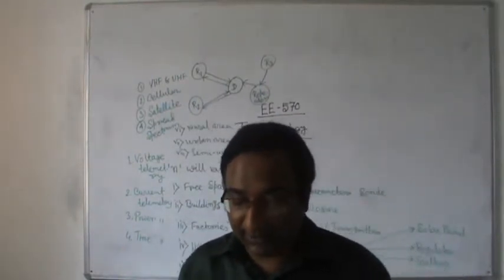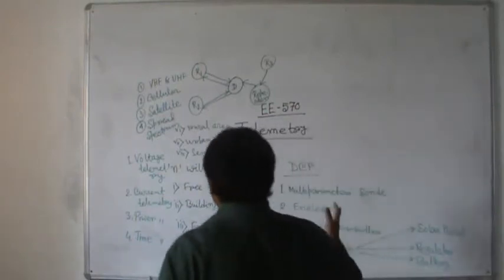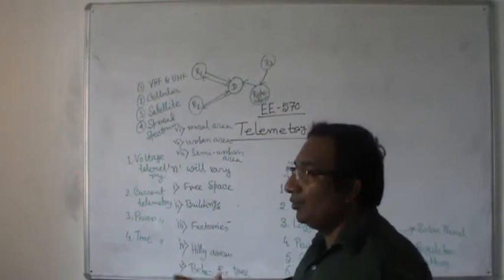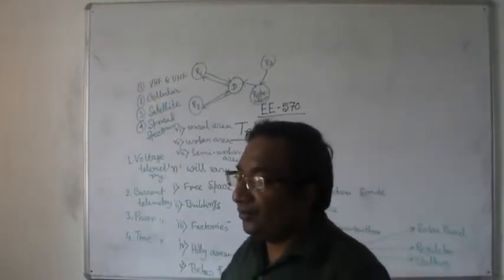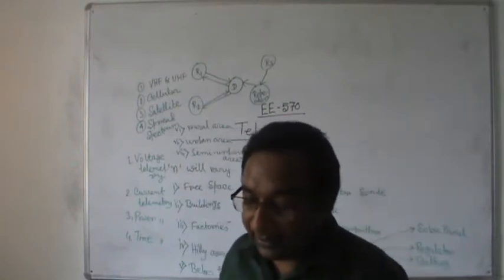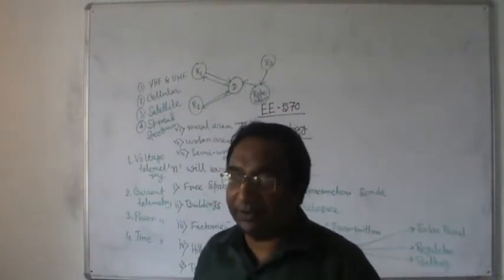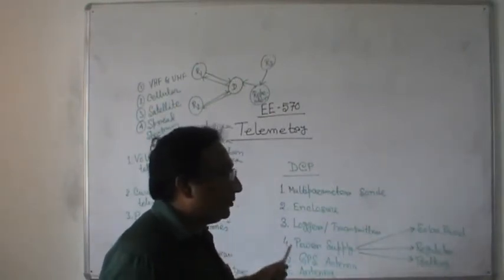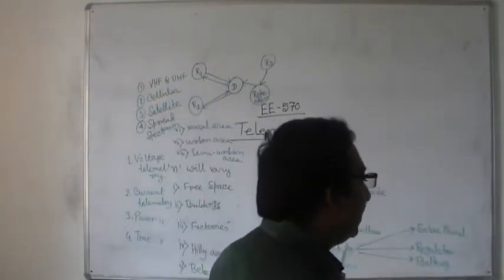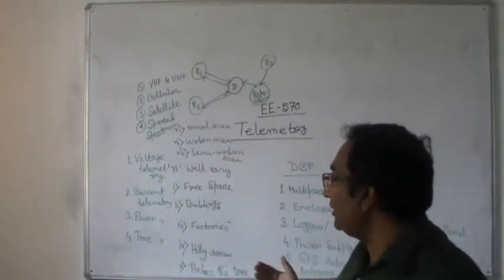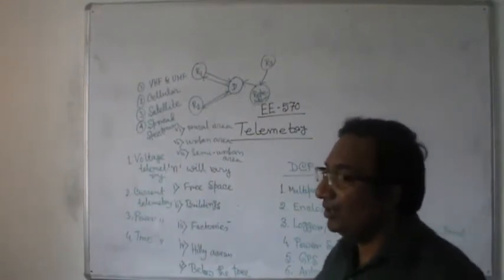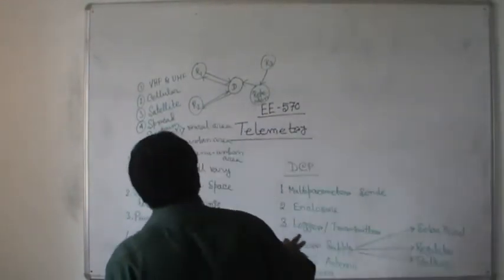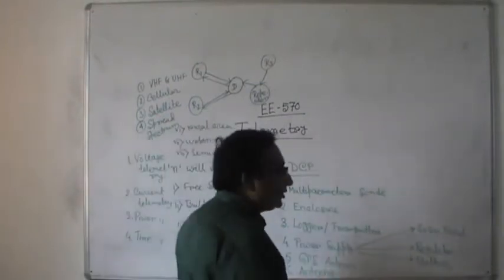Then system installation requirements — what are the basic requirements to install the telemetry system in a remote or local location. Then redundant transmission of data — if it is necessary, then only it will be used. Then the cost of network installation — that is another very important thing because economy is one of the most profound factors related to telemetry. Then support and maintenance — what should be the provision for troubleshooting if the system is not working properly. Cost of the transmission service for this telemetry-based data transmission.